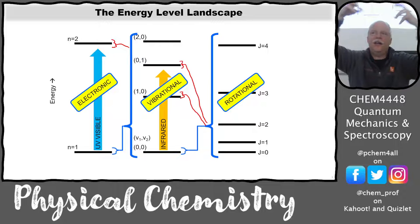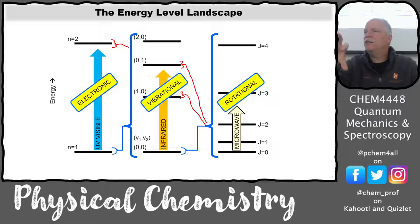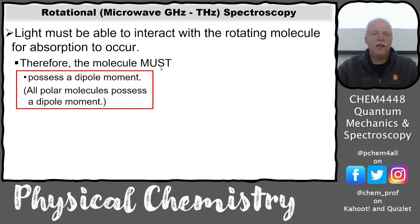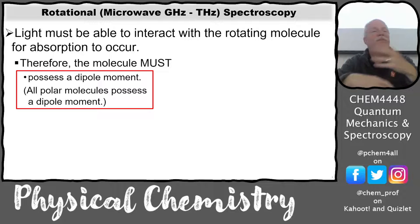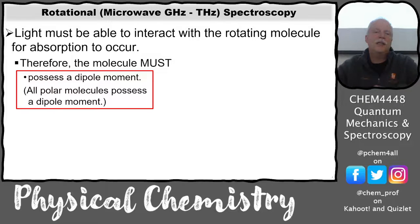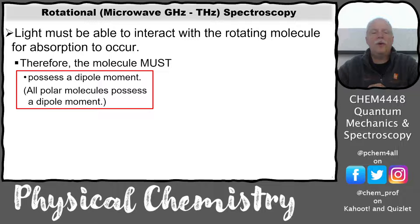Rotation takes place in the microwave region — really low energy light. Light must interact with a rotating molecule, so the molecule must possess a permanent dipole moment. All polar molecules have a dipole moment, so water has a pure rotational spectrum. Nonpolar molecules like methane or CO2 do not — CO2 is symmetric with no permanent dipole moment. Carbon monoxide would have one.